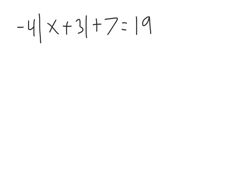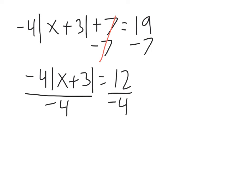So again, we have negative 4 times the absolute value of x plus 3 plus 7 equals 19. So we need to get rid of the plus 7 first, and then the negative 4 to leave, so we just have the absolute value on the left side. So subtract 7 from both sides. So we have negative 4 times the absolute value of x plus 3 equals 12. Then we need to undo that multiplication happening right here. So we divide both sides by negative 4, and we get the absolute value of x plus 3 equals negative 3.